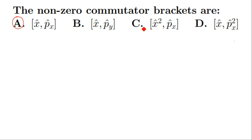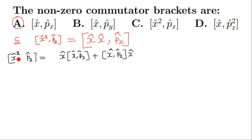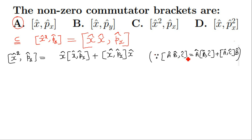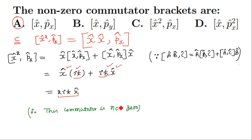For commutator c, x-cap squared equals x-cap times x-cap. Using the property that [AB, C] = A[B,C] + [A,C]B, the commutator [x-cap², p-x-cap] expands into x-cap times [x-cap, p-x-cap] plus [x-cap, p-x-cap] times x-cap. We already know from part a that [x-cap, p-x-cap] equals iota h-cross. Since iota h-cross is a scalar, the equation becomes 2 iota h-cross x-cap. Hence commutator c is also non-zero.